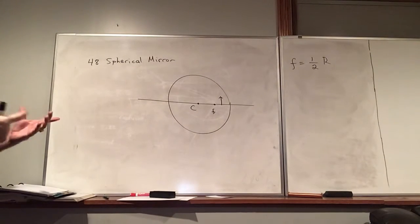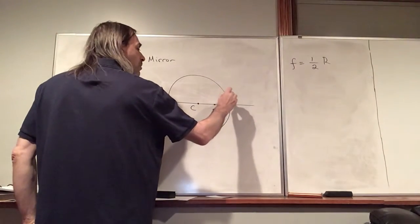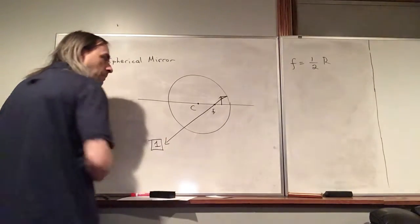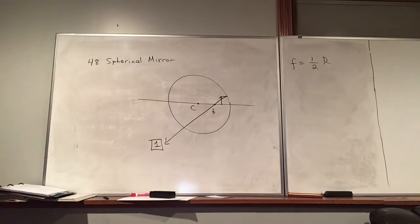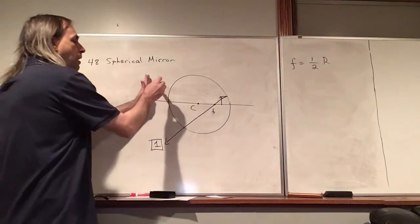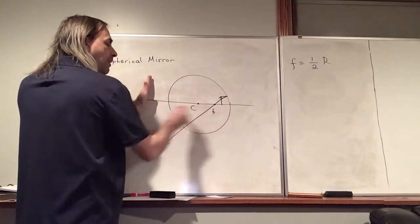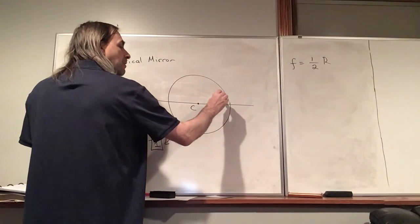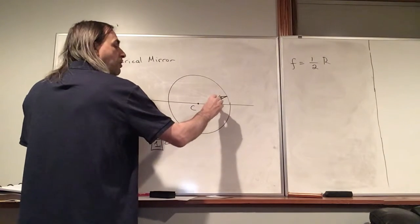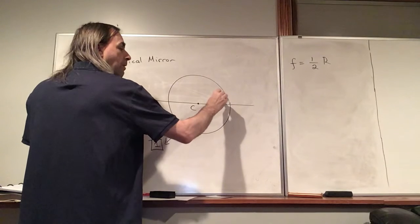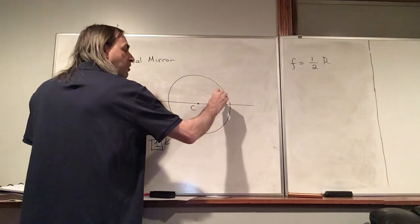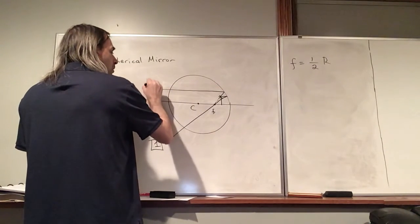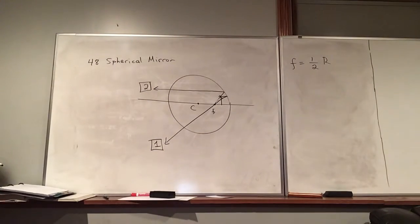So let's consider what these rays would look like in this case. The first one: parallel to the principal axis and then through the focal point — that one's no problem. Now ray two: remember when our object was over here, we said ray two goes through the focal point and then comes back parallel to the principal axis. Well, how are we going to do that now? The focal point is behind us, so what we do is we go away from the focal point. We start here but move in this direction away from the focal point. Then when it hits the mirror, it bounces back parallel to the principal axis.